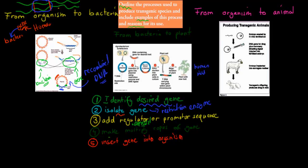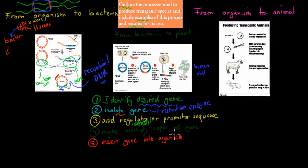By making lots of copies — say thousands or millions — and then putting them into thousands of bacteria, we can make sure that at least a couple of the bacteria will survive to reproduce. Eventually the whole population will have that gene. So we make lots of copies just to increase the chance of success for this transgenic species.